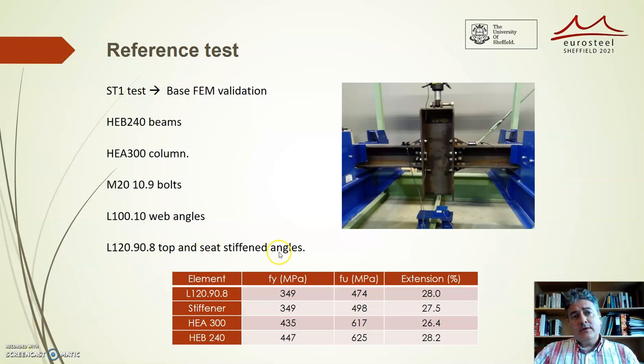The beams were simply supported and the load was applied as shown in the figure so the top angle is the one below. The gap between the beam and the column flange in the experimental work was about 2 mm.